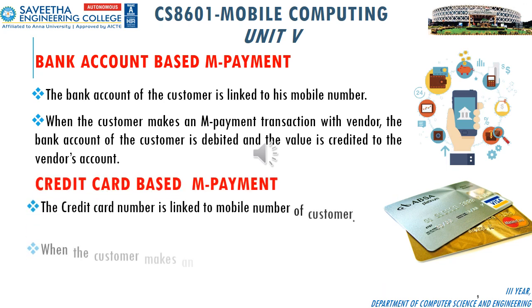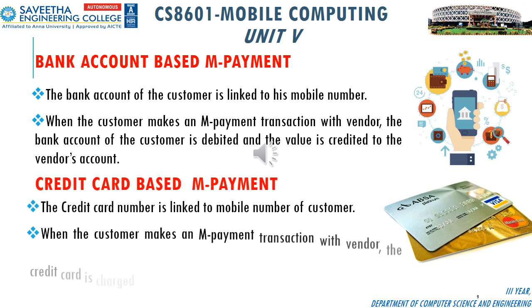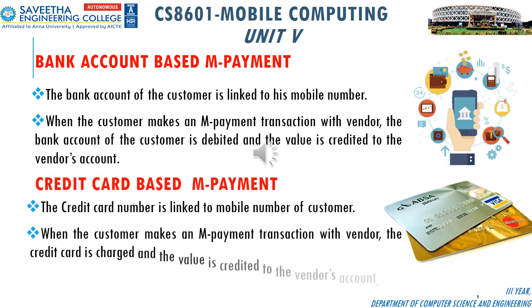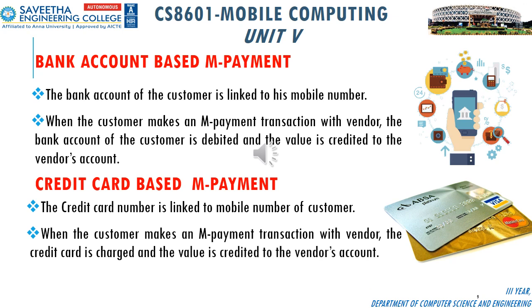Credit card-based m-payment works as follows: the credit card number is linked to the mobile number of the customer. When the customer makes an m-payment transaction with a vendor, the credit card is charged and the value is credited to the vendor's account.